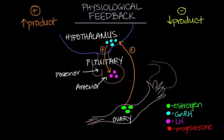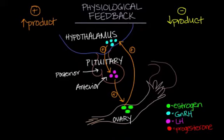The hypothalamus communicates its message down to the anterior pituitary. LH can also go ahead and stimulate the release of even more estrogen — again, positive feedback. So here we have a cycle: estrogen causes the release of GnRH, which causes the release of LH, which causes the release of even more estrogen, and the cycle continues. You can see that chain effect we were talking about.